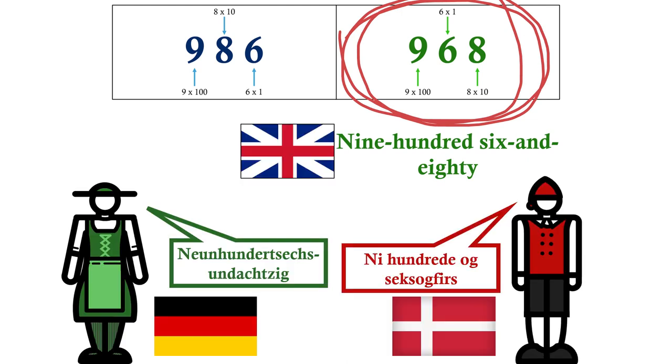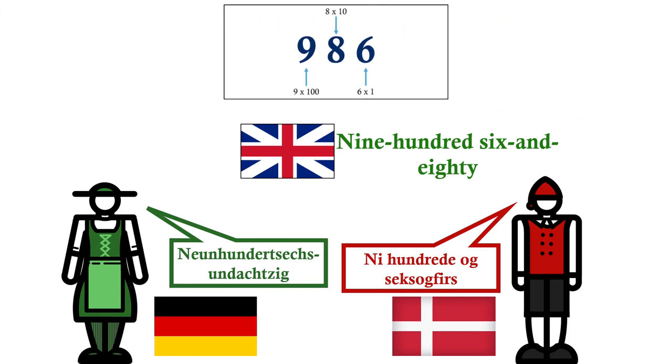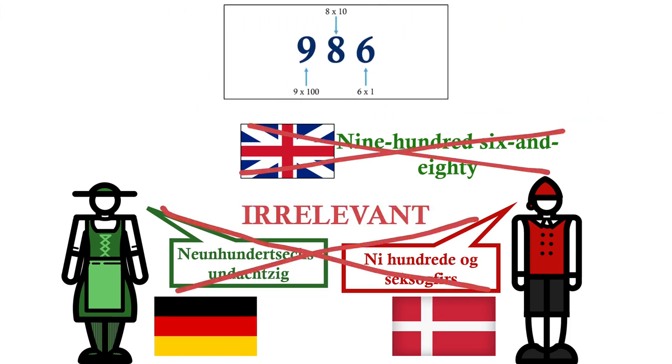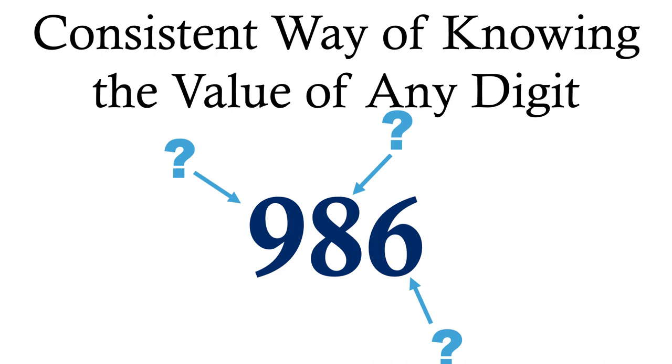But in Germany and Denmark, and back in the 1700s in England, numbers were still written in the same order, because it's not about what order we say the numbers in, it's about having a consistent way of telling what the value of a digit is.